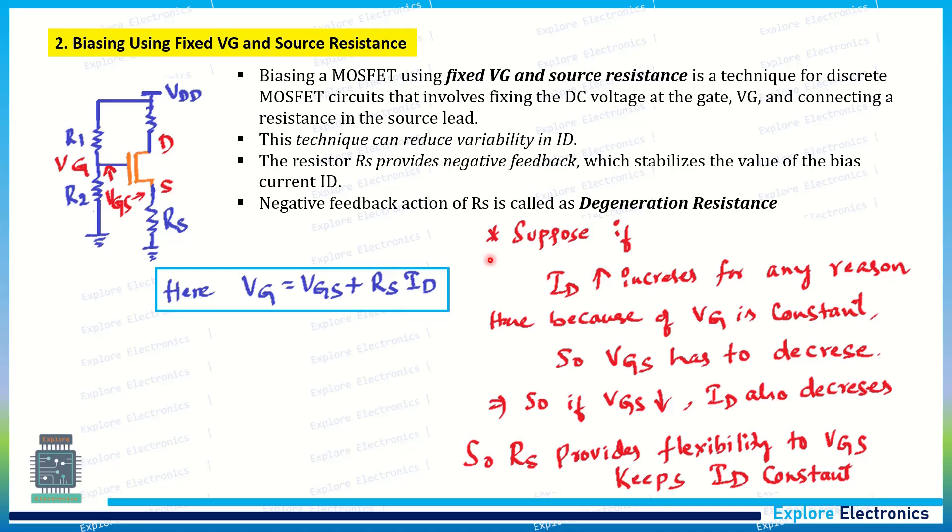Suppose if in the same case as we look at the previous method, if ID increases for any reason, means any reason means because of the temperature or because of any physical parameter, if ID increases, what happens? If ID increases in this expression, because VG is constant, VGS should decrease since RS is also constant. And remember, in the saturation region, ID will be dependent on VGS. Here in, because of the variation in temperature, ID increases. In this expression, it will make VGS reduces. VGS will reduce. And because of VGS reduces, ID again will reduce.